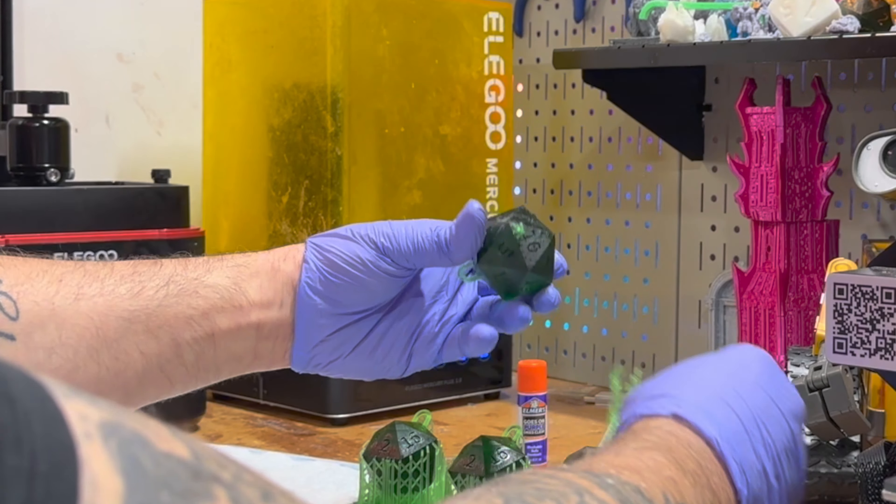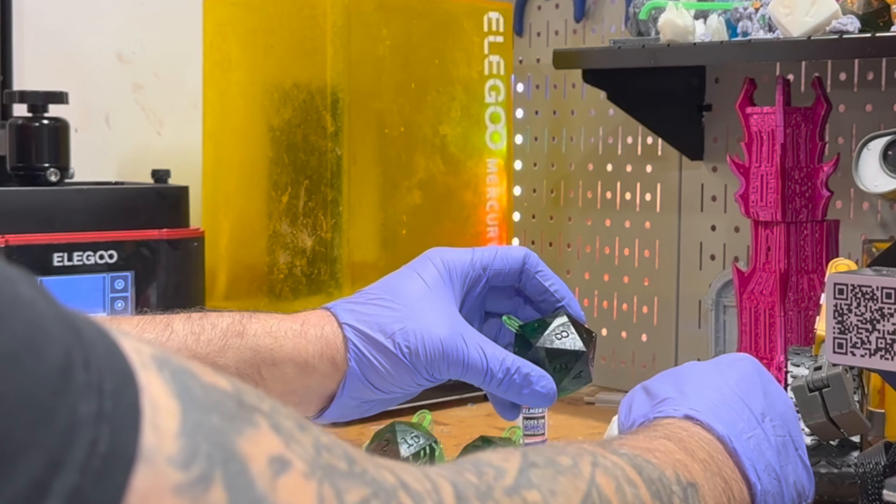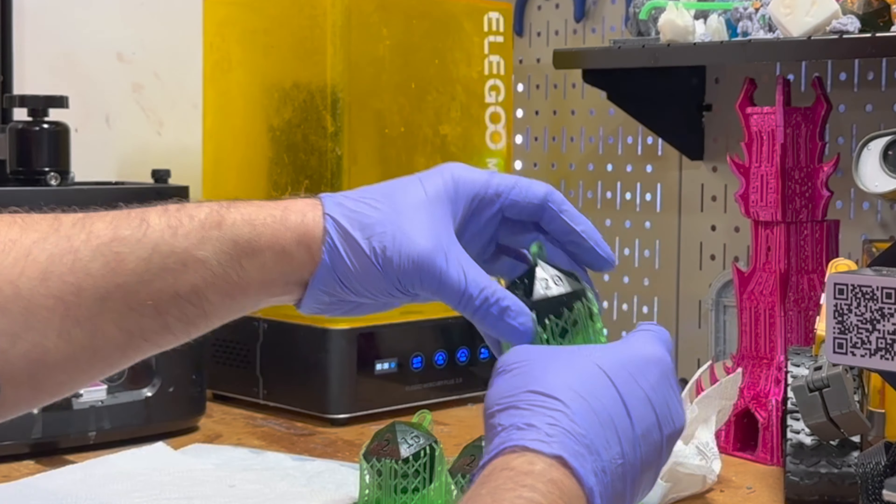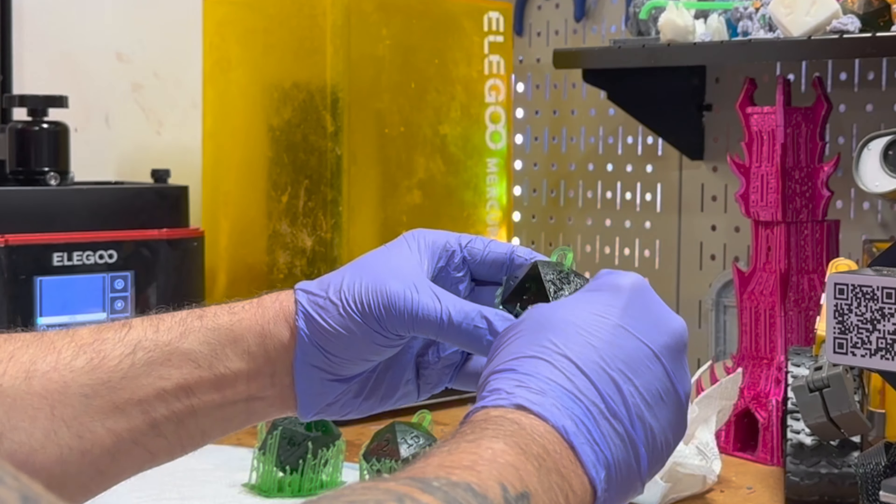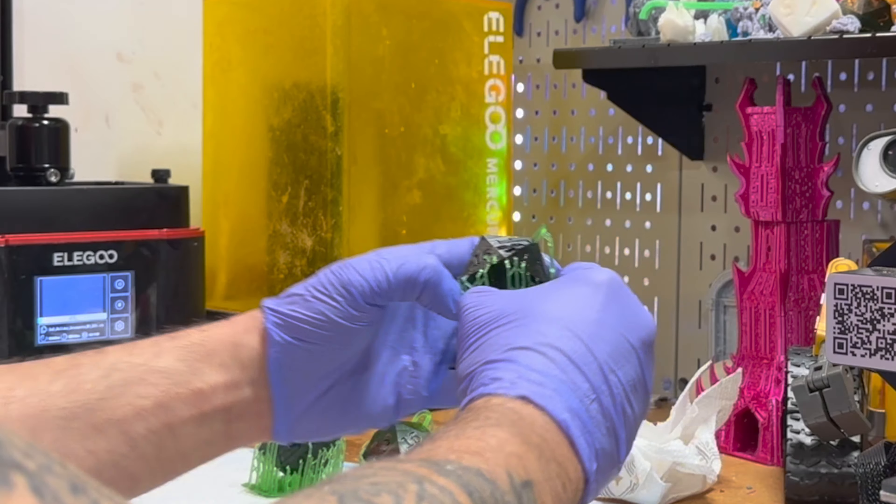So I'm going to break away the supports. I'm going to remove any that are sort of sticking to the print itself. Then I'm actually going to put the support here. Now we're just going to do two dice so you can sort of see. Same thing. I'm going to break away the support.